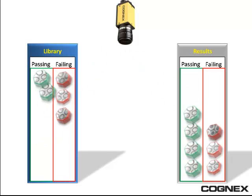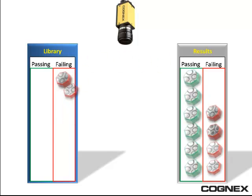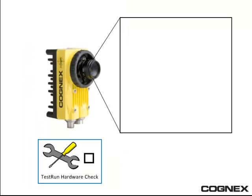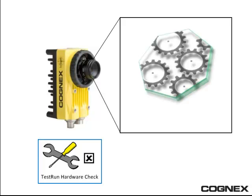This ensures the edits still yield the correct results, giving peace of mind and saving hours of testing. Consistent results from a vision program depend on consistent image acquisition quality — Test Run's hardware check measures the integrity of the image acquired by the vision system.